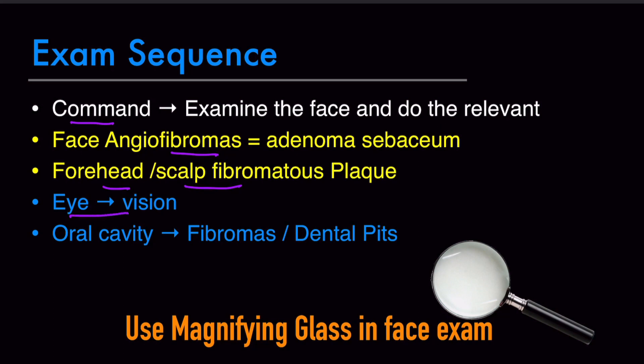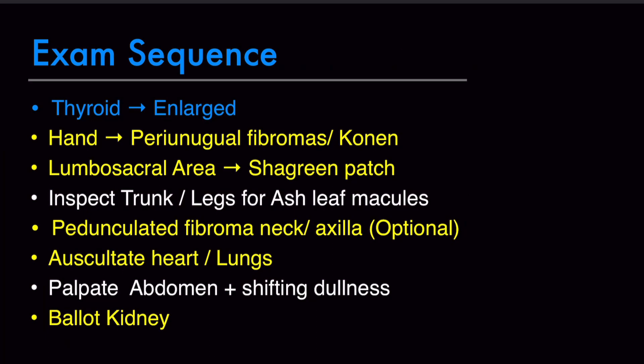Check the eye and vision using a vision card. In the oral cavity, look for fibromas and dental pits. Use a magnifying glass when examining the face because adenoma sebaceum has telangiectasias that are only visible with magnification — and you should show this to the examiner. Then examine the thyroid, which might appear enlarged. In the hands, look for periungual fibromas or Koenen tumors. In the lumbosacral area, look for the shagreen patch. Inspect the trunk and legs for ash leaf macules and café-au-lait macules. Then auscultate the heart and lungs, palpate the abdomen, check for shifting dullness, and ballot the kidneys. You can also check for a pedunculated fibroma on the neck or axilla.